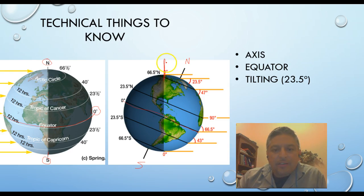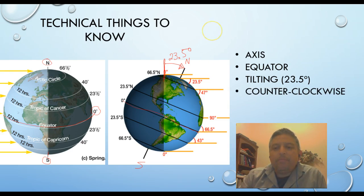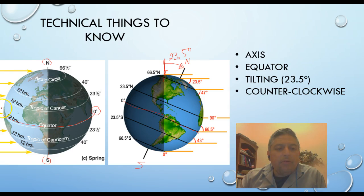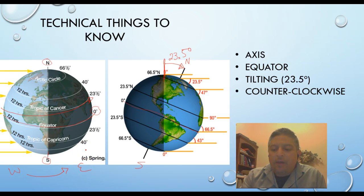The tilting of the planet is at 23.5 degrees, and that is referring to this tilting of the axis. So it's actually moved 23.5 degrees — it's not 50 degrees. The counterclockwise motion or rotation of the planet: if the planet moves from left to right, that's the way it rotates, or we can say it goes from west to east — that is counterclockwise.